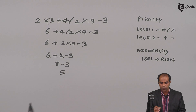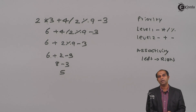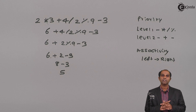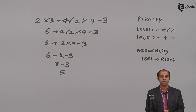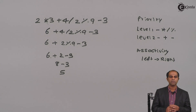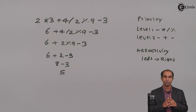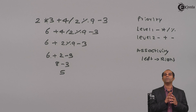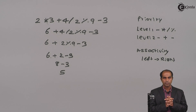The entire expression got reduced to 5 by the virtue of priority and associativity. So we can conclude: there are 5 arithmetic operators — addition, subtraction, multiplication, division, and modulus. Priority has 2 levels: multiplication, division, and modulus at higher priority; addition and subtraction at lower priority. Associativity tells us if two operators have the same priority, which one needs to be evaluated first — left to right.